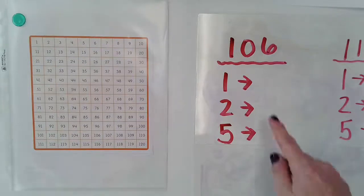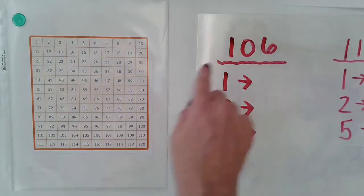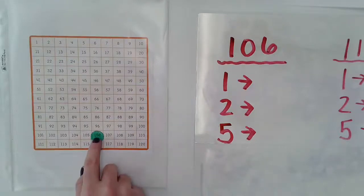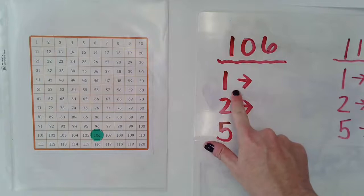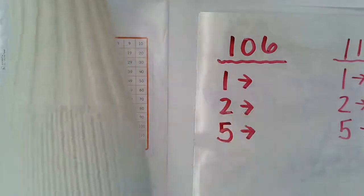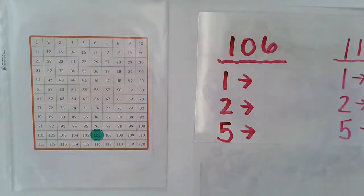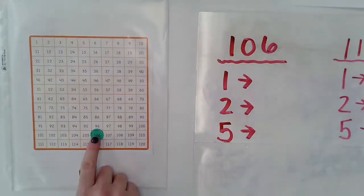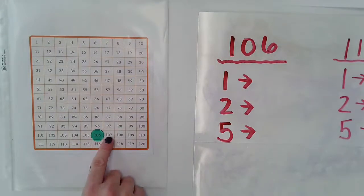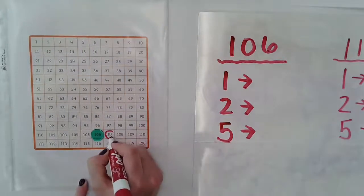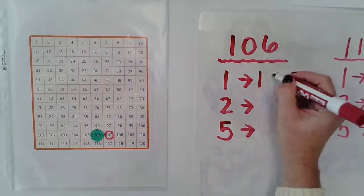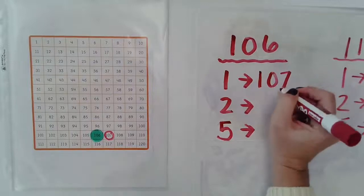So let's go ahead and get started, and we're going to focus on the number 106. I'm going to put my marker on 106. We're going to count up by our ones. So if we want to find one more than 106, we just need to look to the right of that number. Because we're just moving up one more, which would be 107.